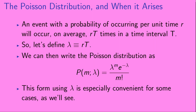An event with a probability of occurring per unit time r will occur on average rt times in a time interval t. Let's define λ = rt. Then we can rewrite the Poisson distribution as P(m | λ) = λ^m * e^(−λ) / m!. This form using λ is especially convenient for some cases, as we'll see later.